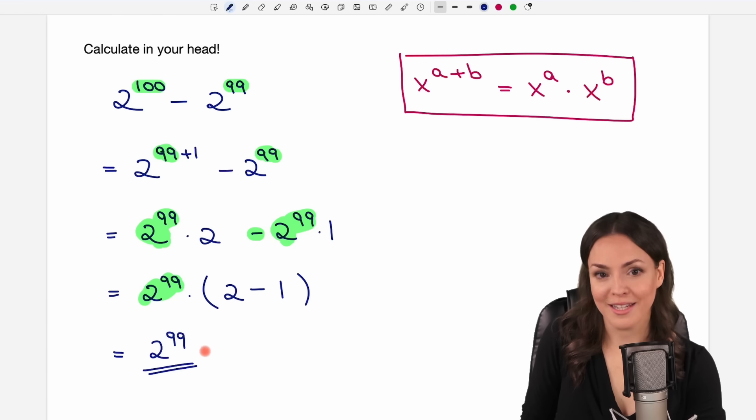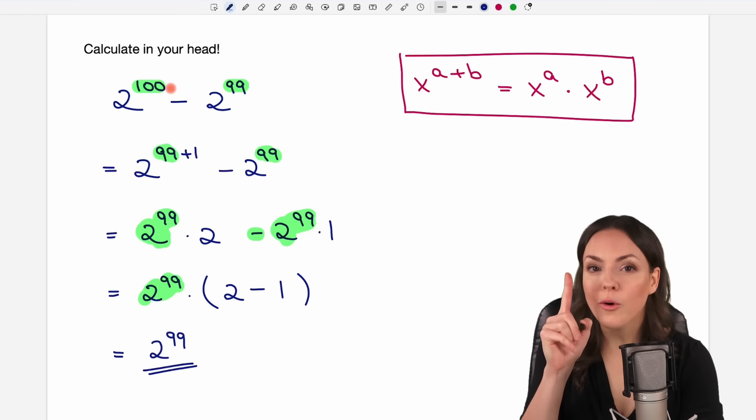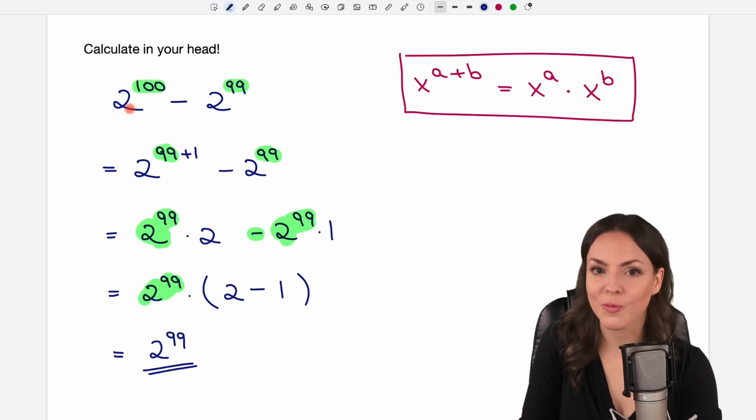Another way would have been if you knew that 2 to the power of 100 is just twice as large as 2 to the power of 99 because you multiplied it one more time by a 2. Then you have double a number here, and you subtract the number itself, and what is left is just the number itself. So this would have been another way.